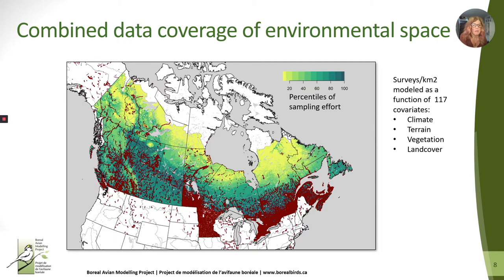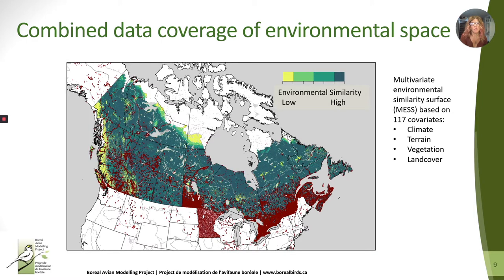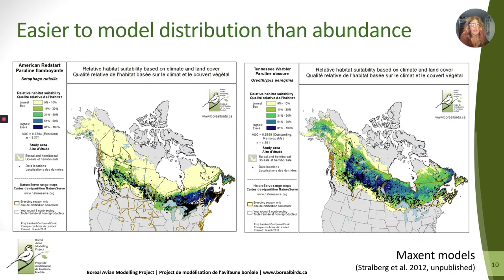By assembling enough individual point count datasets, we've been able to cover most of the environmental space in Canada south of the Arctic. This map shows percentiles of predicted survey effort based on over 100 environmental covariates. Environmental conditions of northern regions are not very well sampled relative to southern Canada. But according to a metric based on environmental similarity, there are just a few areas that lie outside the environmental space we've sampled. We're currently working on filling in these gaps in the west.